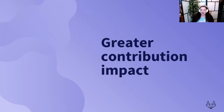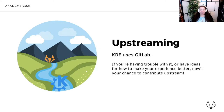So let's talk about how we can all make greater contribution impact — and in order to do that, we need to talk about the term upstream. I know a lot of you are familiar with the term because KDE is a popular upstream for many projects, and it also contributes upstream to other projects. In this case, GitLab is the upstream version of the KDE instance that you're all using to contribute to KDE. So if you're having difficulty using the GitLab instance or have an idea for how to make it better, you can contribute upstream so that everyone using GitLab can benefit.